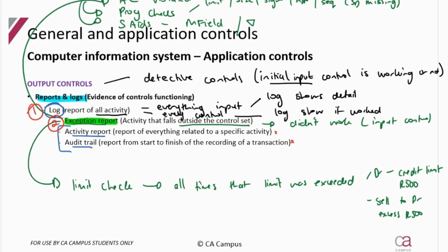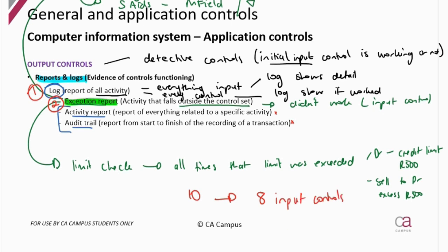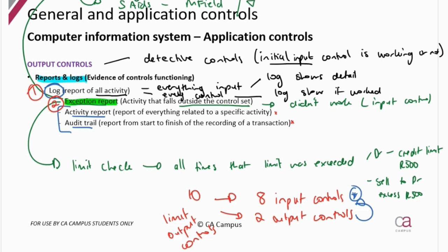For every input control you can now discuss a corresponding output control. Often in a solution where a question is out of ten marks and there are eight input controls expected, UNISA generally limits the output controls to the ones that are crucial in recording that balance or transaction according to the specific assertion. So you might only get two output controls. Importantly, to earn output control marks you must have first discussed the inputs, because the output is testing or detecting where that input control didn't work.